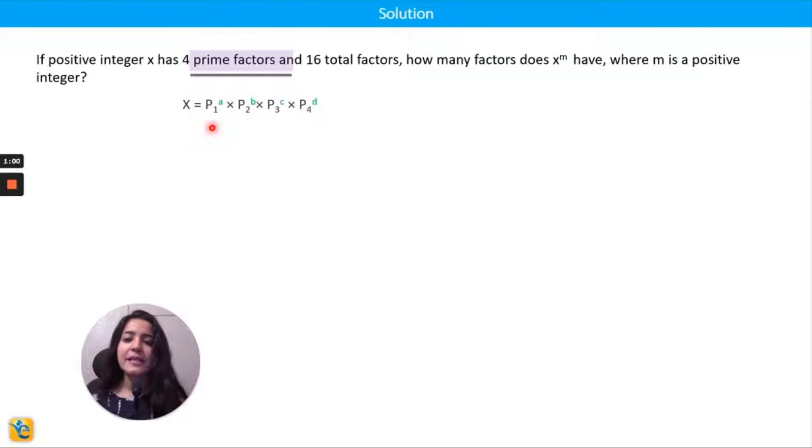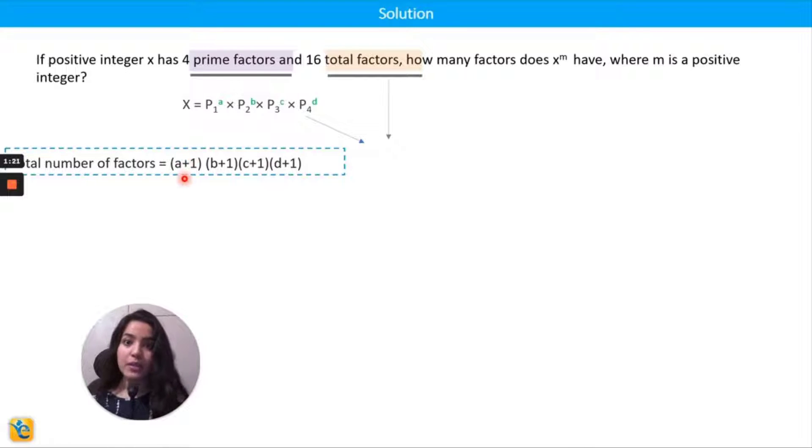And it has a total of 16 factors. Now this is something we covered in the concepts - how do you get the total factors that a number has from its prime factorization. So what you have to do is increase each of the powers a, b, c, d in my case, increase them by one and multiply these increased numbers. So since I know total number of factors here for me is 16, I can just equate this to 16.